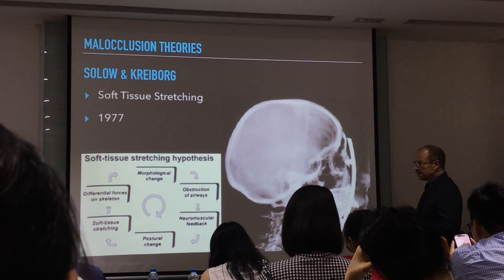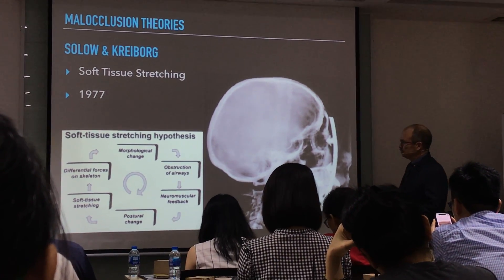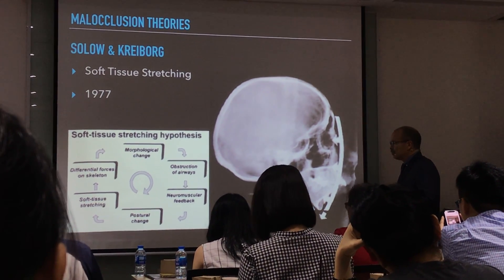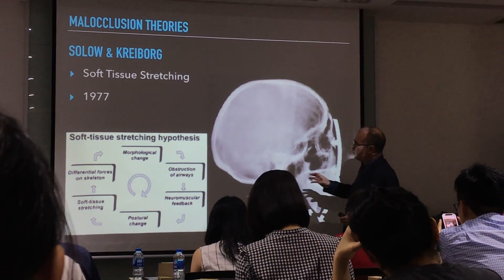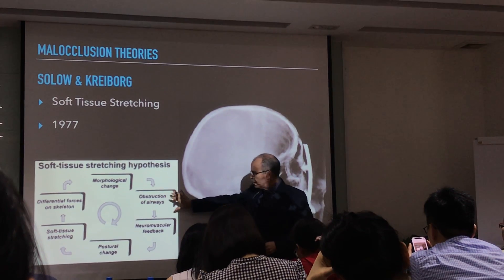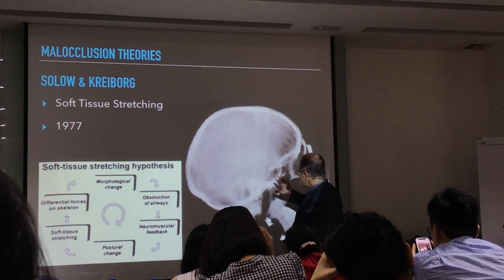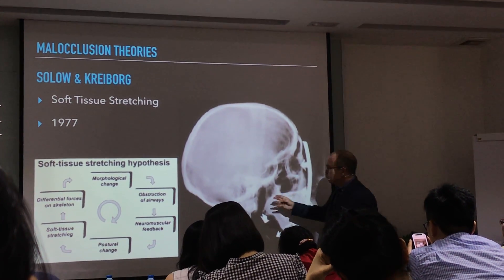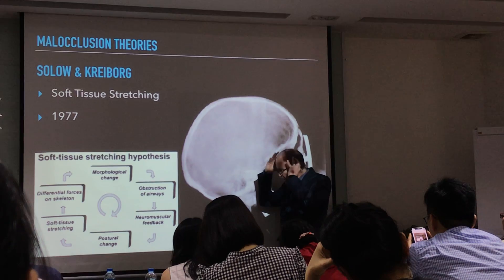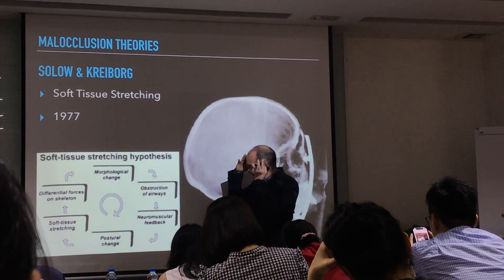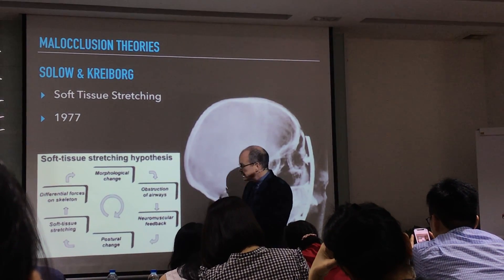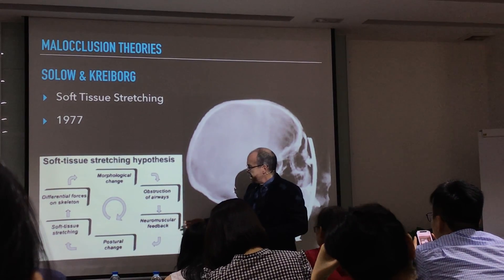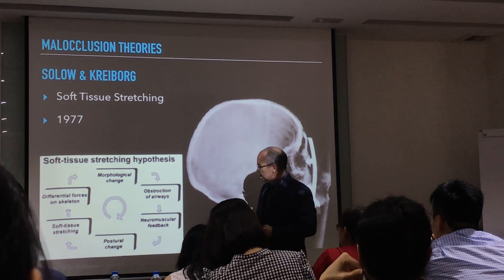They put forward the theory of Attrition because the diet of these Australian aborigines was so hard, so fibrous. So they had erosion not only occlusally but also interproximal attrition.